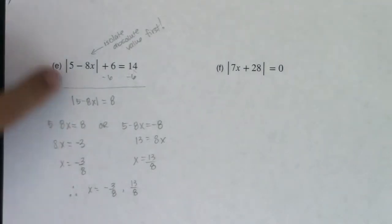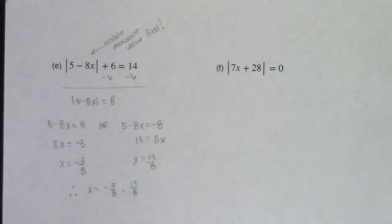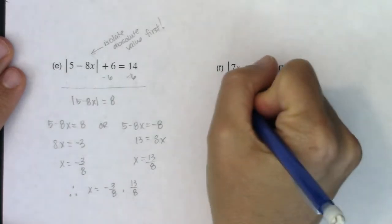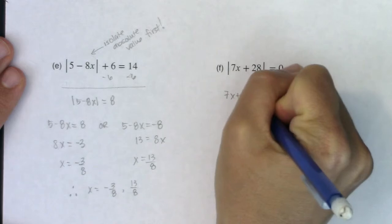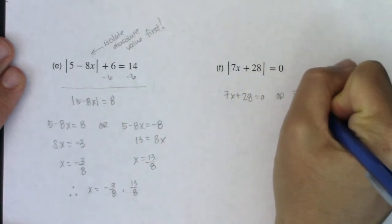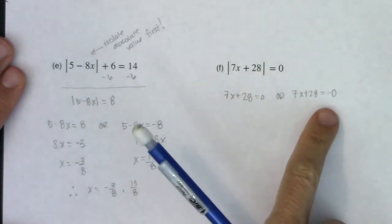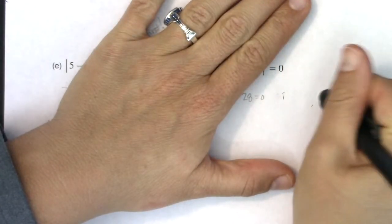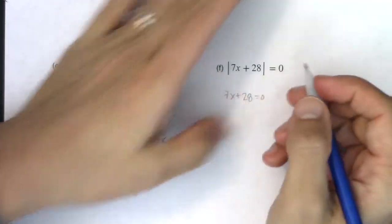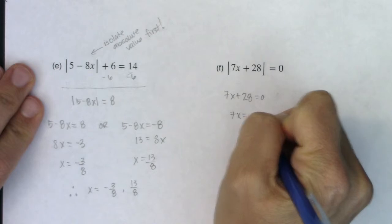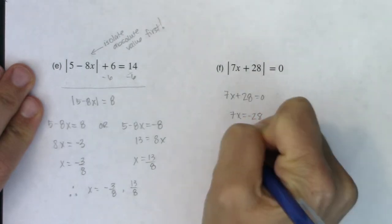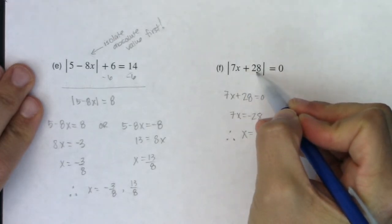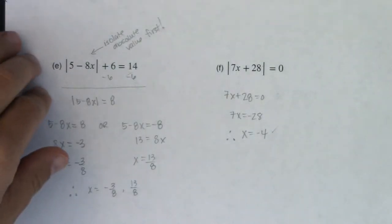You can plug those into the original equation to verify. For example 5f, the absolute value is isolated and it equals zero. You might set up two equations: 7x plus 28 equals zero, or 7x plus 28 equals negative zero. But negative zero is just zero, so these become redundant — you only have one equation to solve. Subtracting 28: 7x equals negative 28, so x equals negative 4.